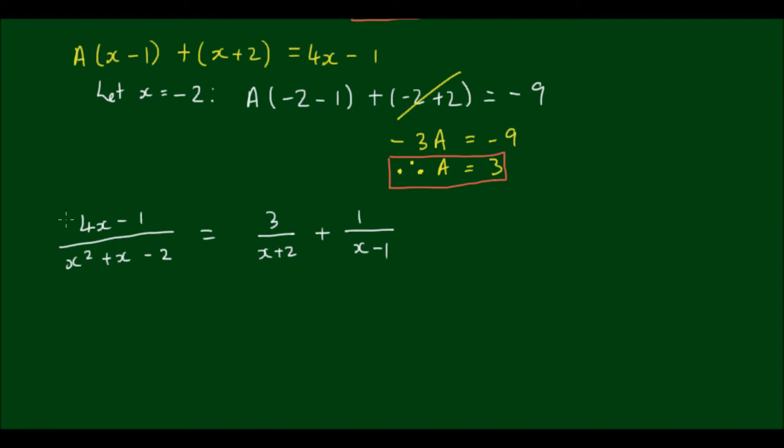And you may have been taught this more formally. So A outside of (x-1) plus B outside of (x+2) is equal to 4x minus 1.